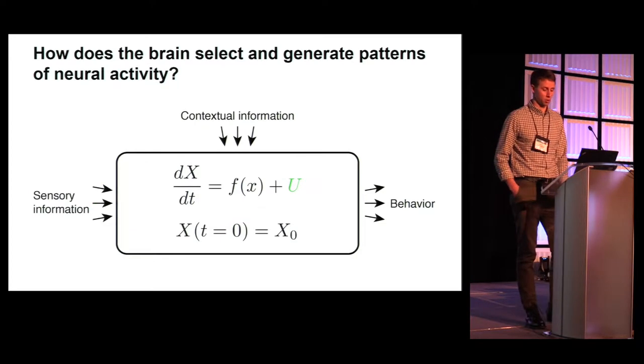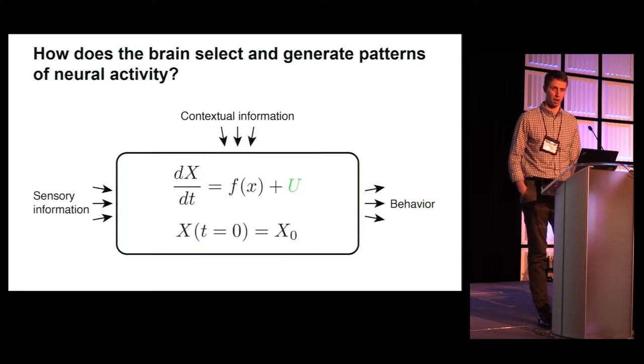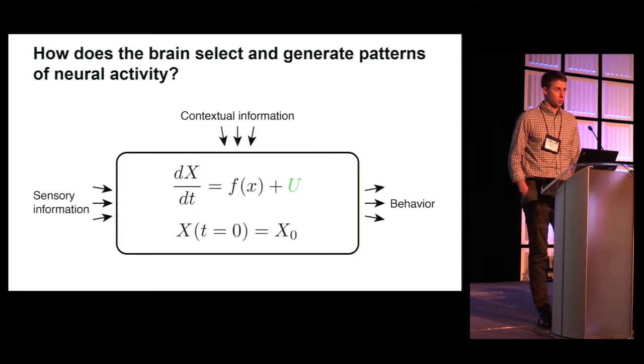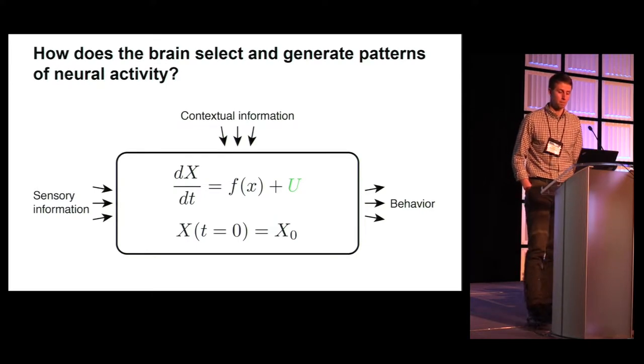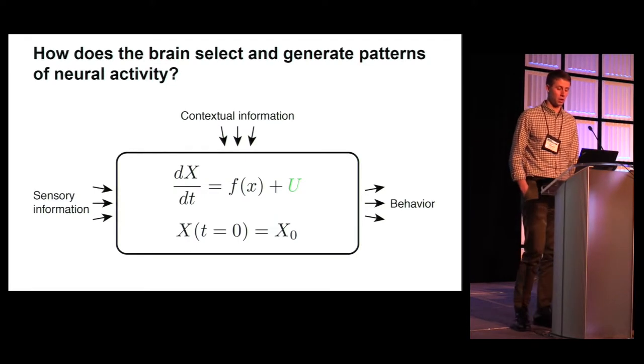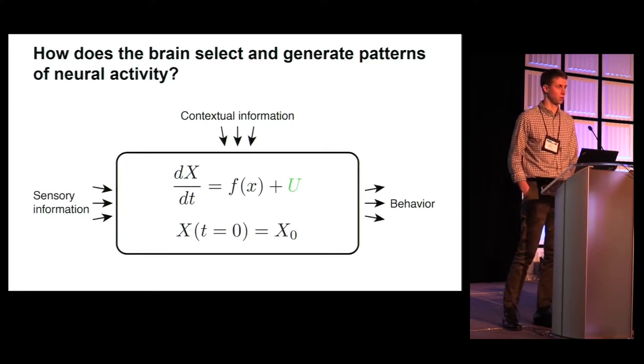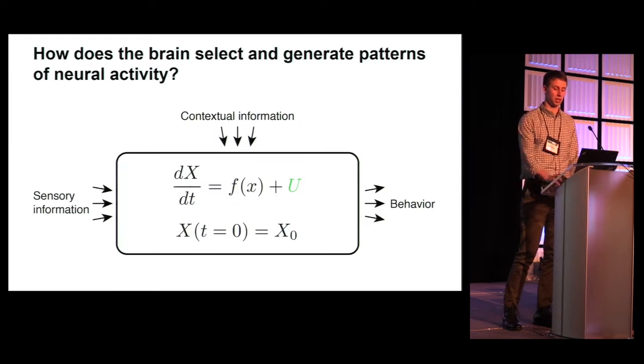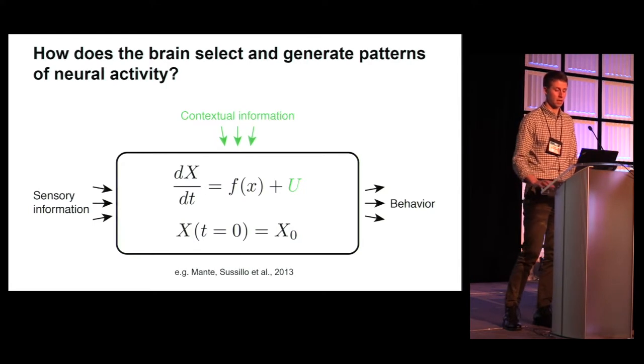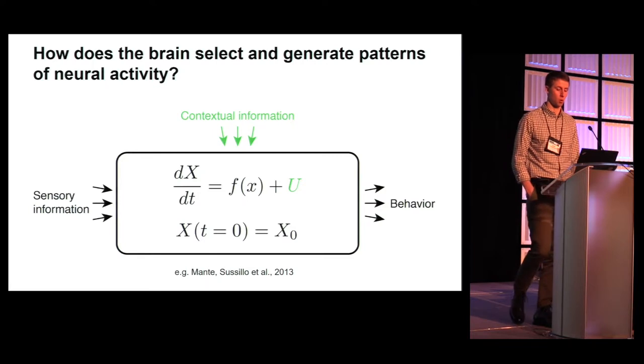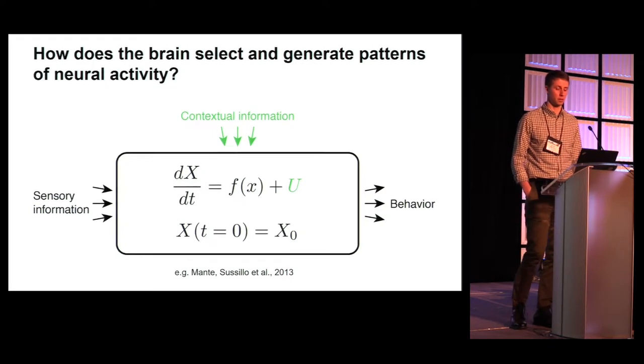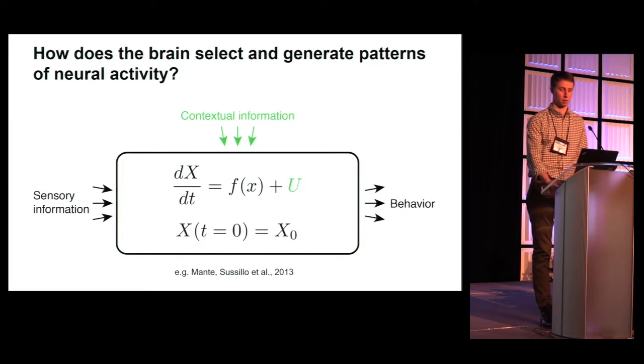Another mechanism of control is the external input to a system, here signified by U. External inputs can exert a powerful influence on the dynamics of the system. In the extreme case, a high dimensional input which is temporally complex could essentially govern the dynamics of the system, making understanding the inherent dynamics difficult. On the other hand, a low dimensional input can reconfigure the dynamics of a system to change its behavior in more interpretable ways. For example, contextual control in prefrontal cortex via such a low dimensional input has recently been proposed by Mante and Sussillo and colleagues.